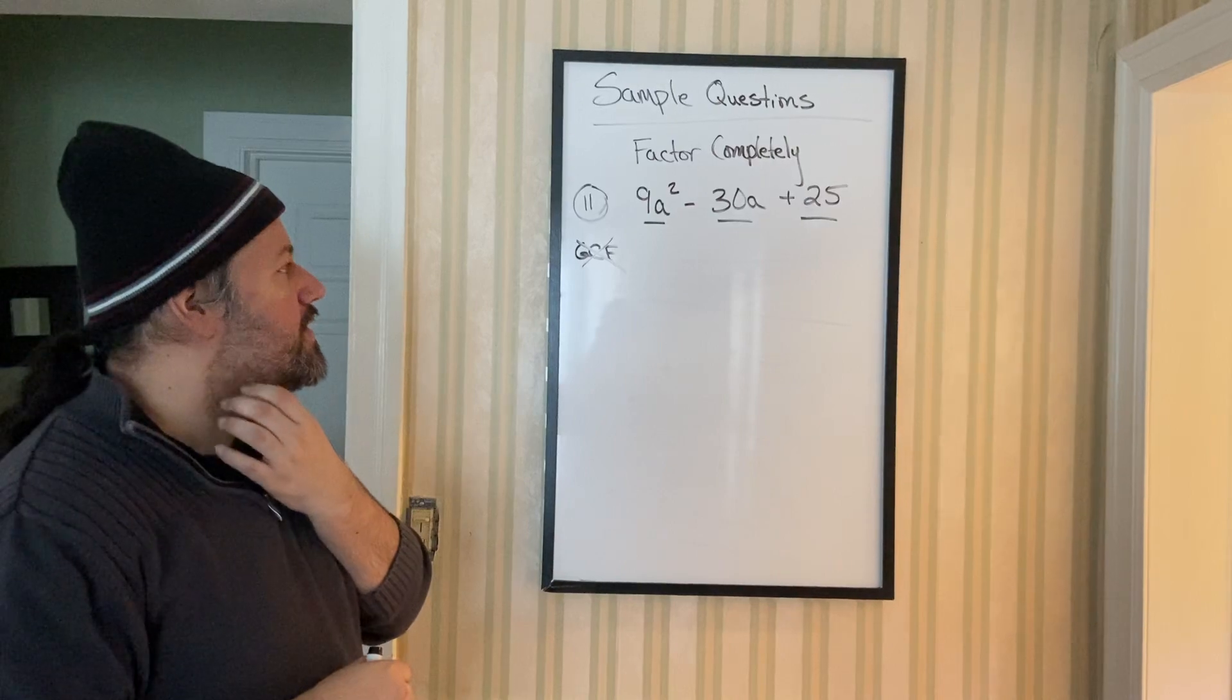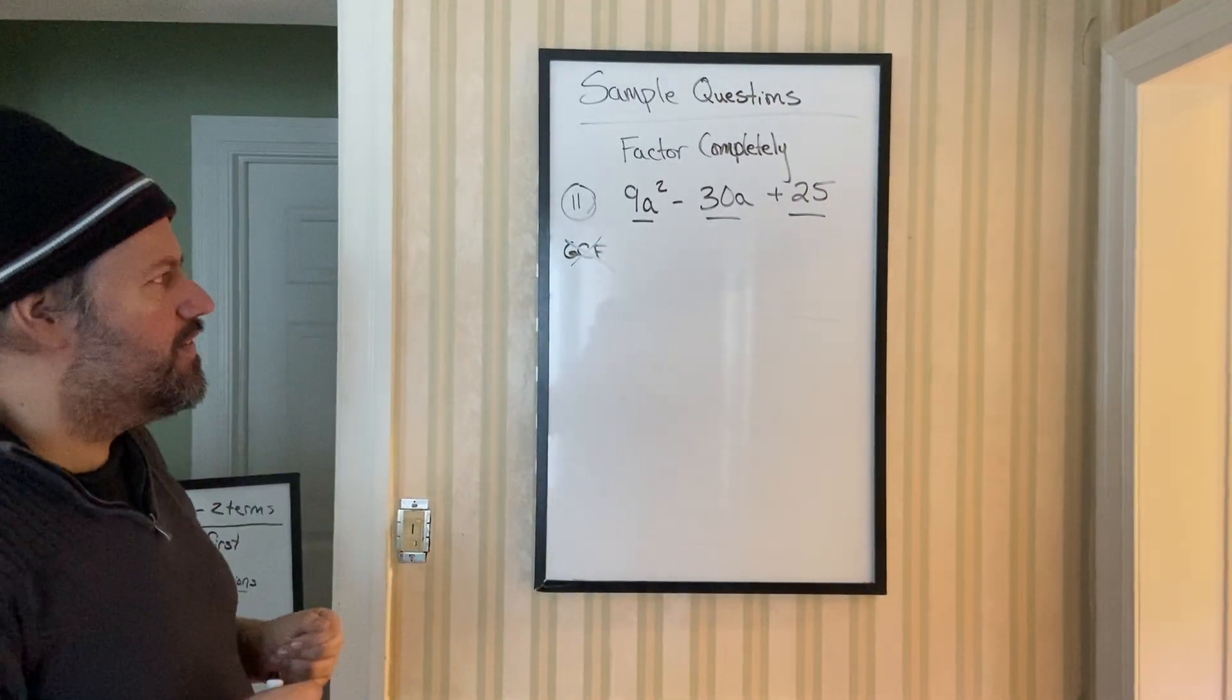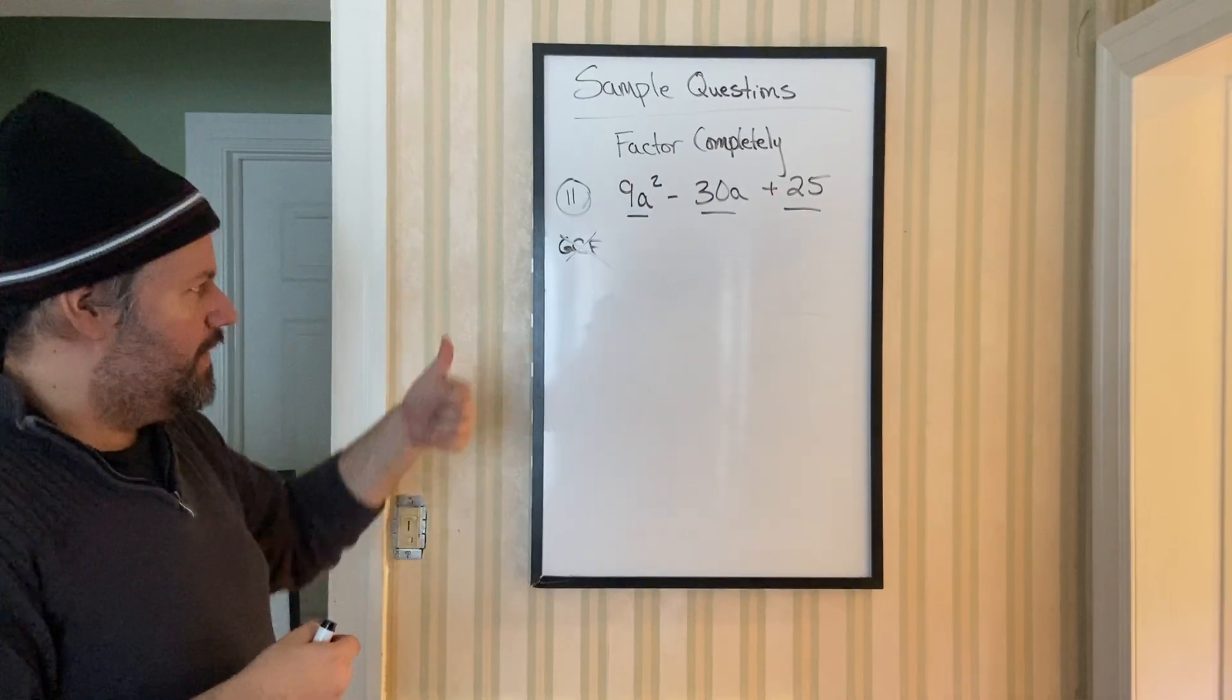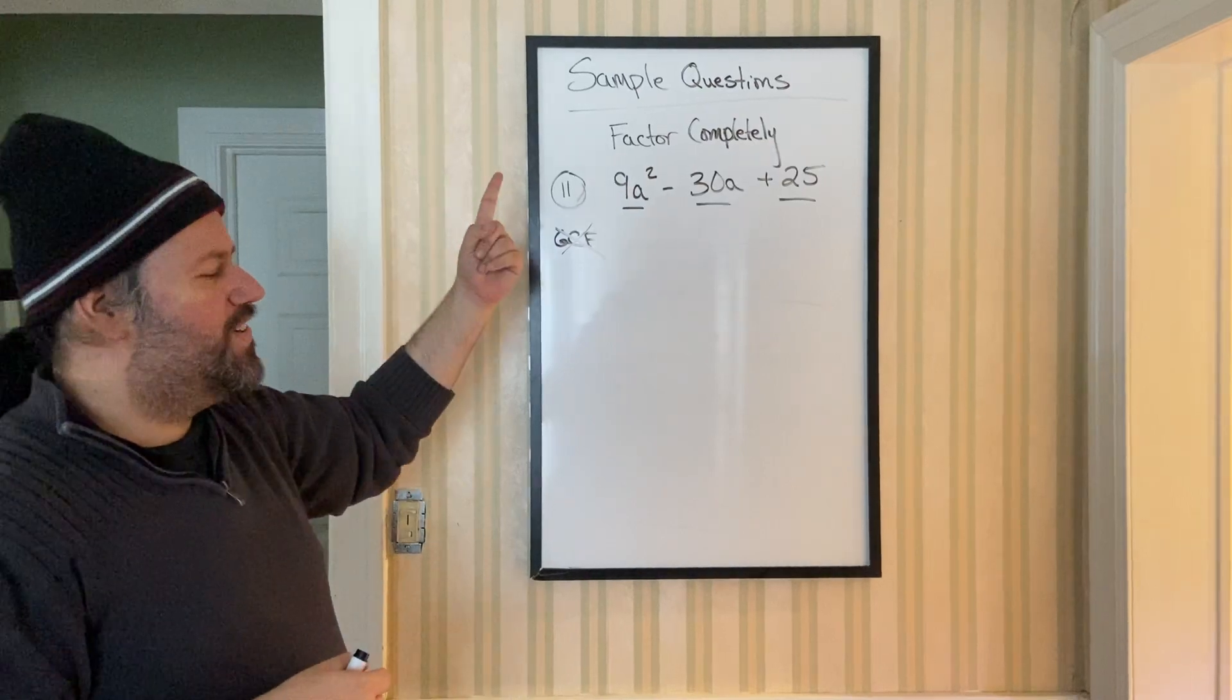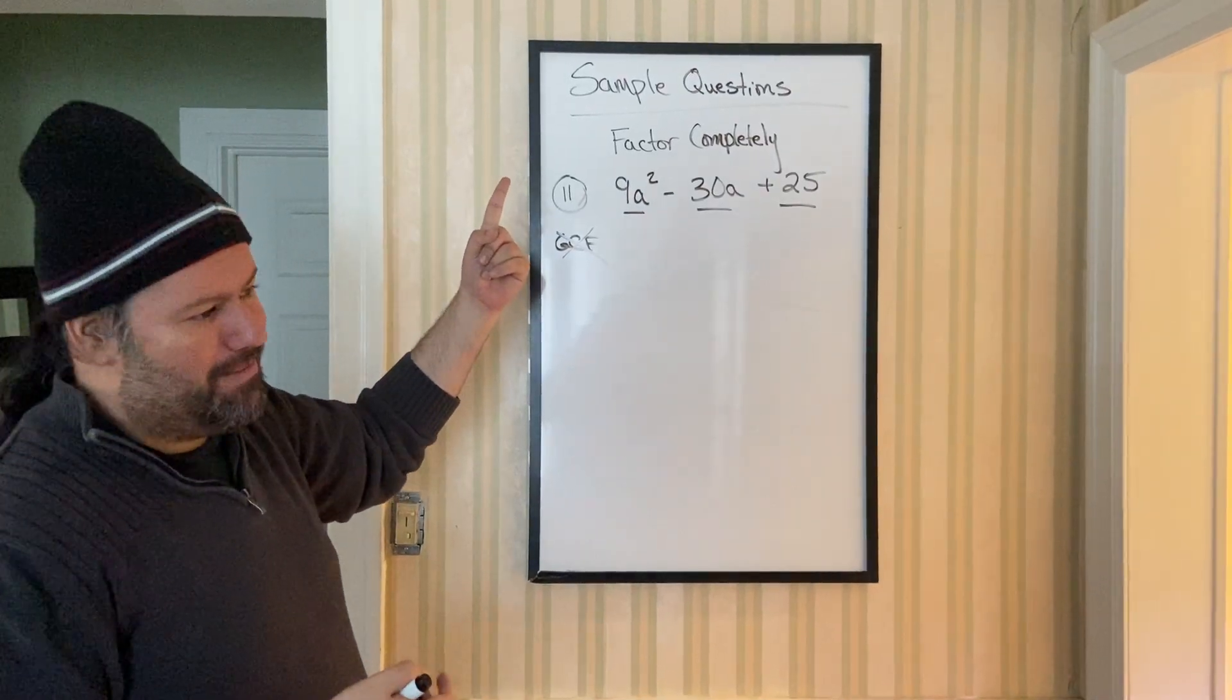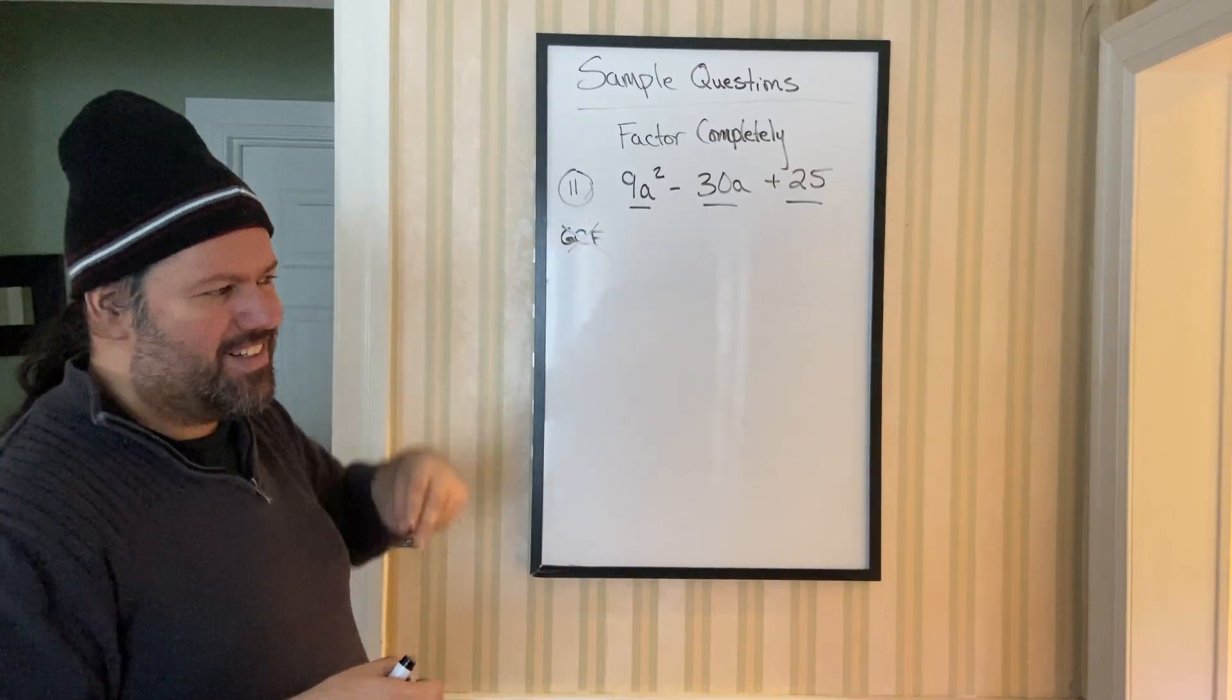What I say to you is once you realize that it's three terms, then what you want to do is ask yourself, are we going to do shortcut? No, it has a leading coefficient. Are we going to do foil? Maybe. Am I going to do arch? I think I'm going to do arch.